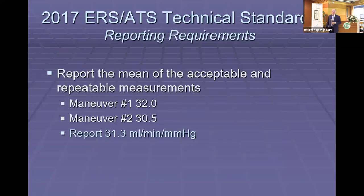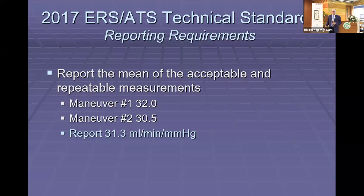We report the mean of two acceptable maneuvers. So in this example, the first test is 32 mmHg and the second is 30.5 — they're within 2 units of one another and both acceptable. The reported value is the mean of the two: 31.3.